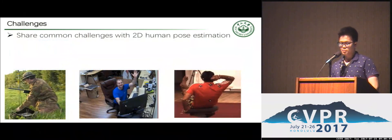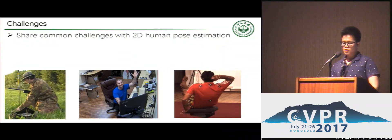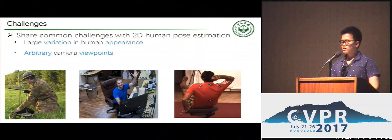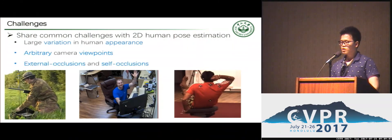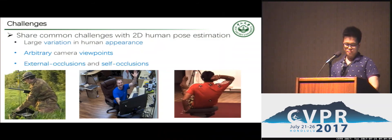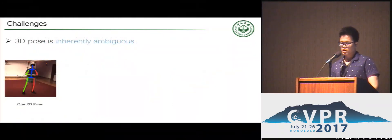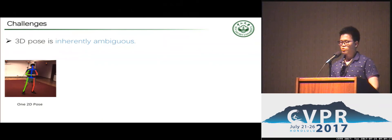3D Human Pose Estimation shares common challenges with 2D Human Pose Estimation, including large variation in human appearance, arbitrary camera viewpoints, and external occlusion and self-occlusion. These three images are a challenging case for 2D Pose Estimation. As for 3D Pose Estimation, in a geometric perspective, 3D pose is inherently ambiguous.